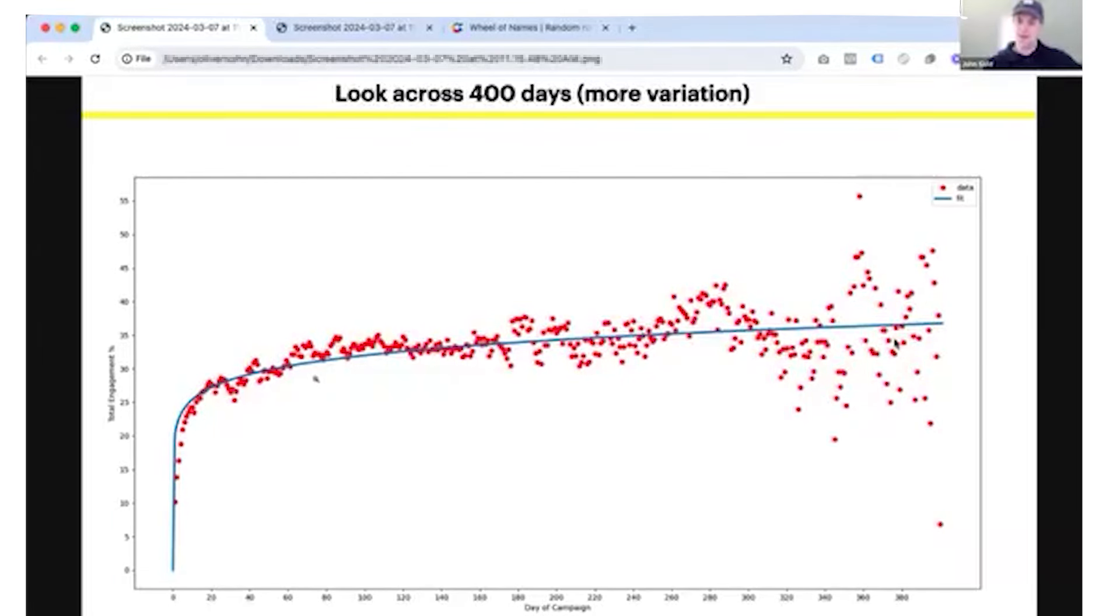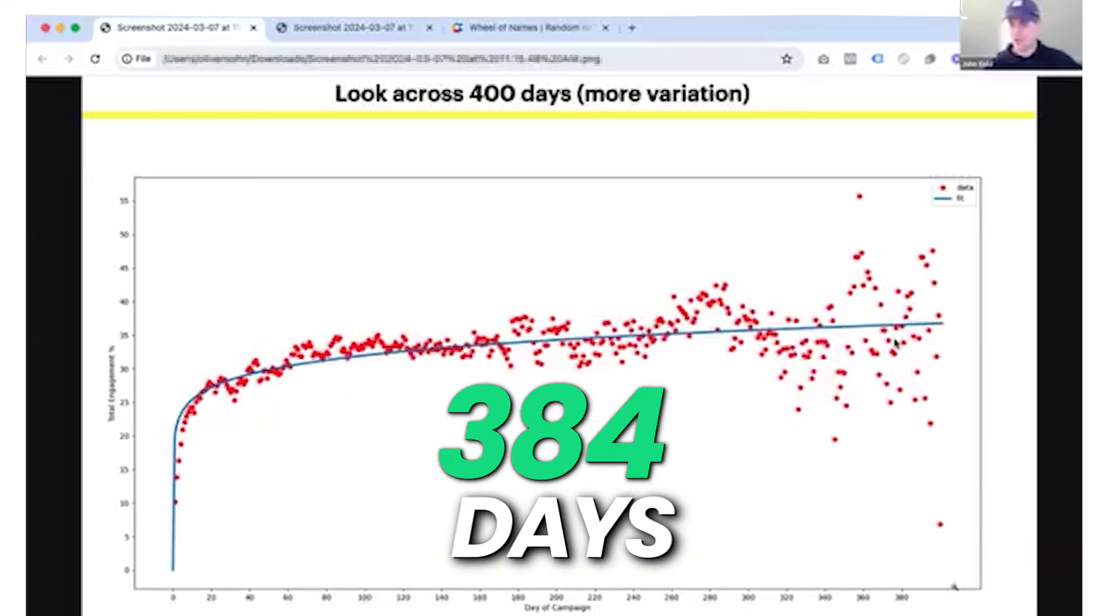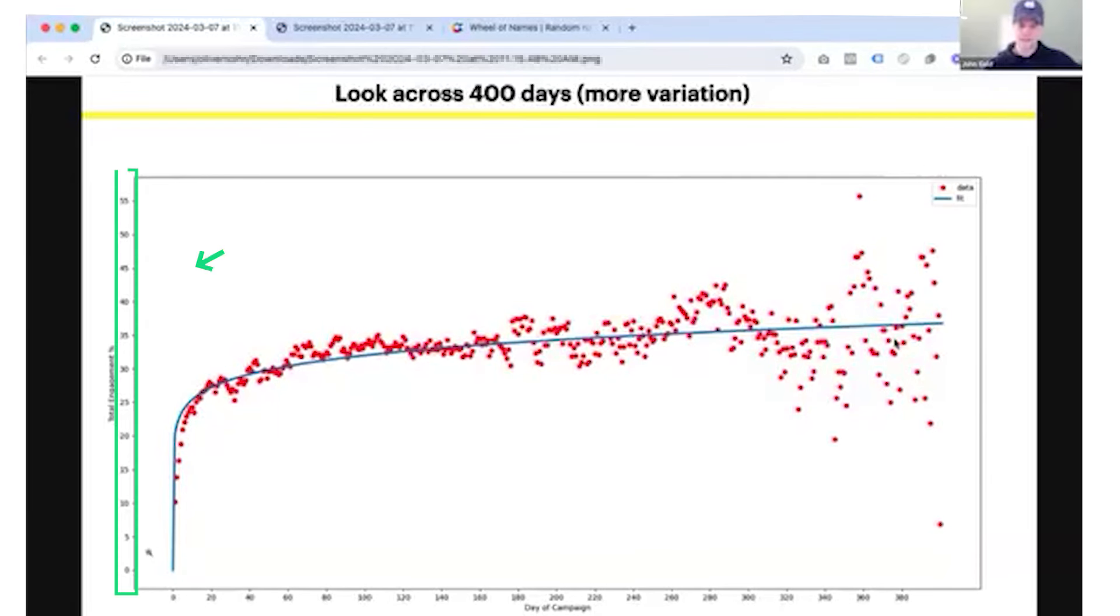A scatter plot is basically this kind of graph that takes a number of data points and just maps them out along an X and Y axis. Ignore the blue curve. What's really important are the red dots because the red dots are all music ad campaigns. On the X-axis you have time, so this graph looks across about 400 days, and then the Y-axis you have the engagement rate.